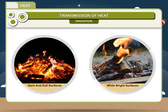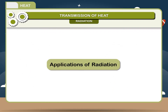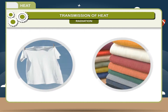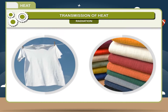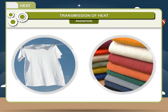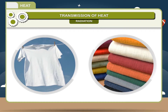Applications of radiation: One, cooking utensils are painted black at the bottom because black surface is a good absorber of heat, as a result cooking will take place faster. Two, white clothes are preferred during summers than colored clothes. The reason is that white color is a good reflector of heat.